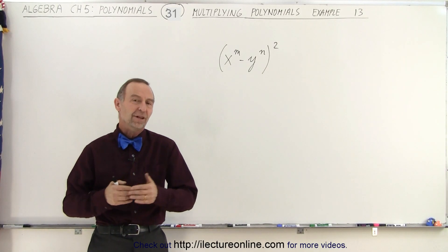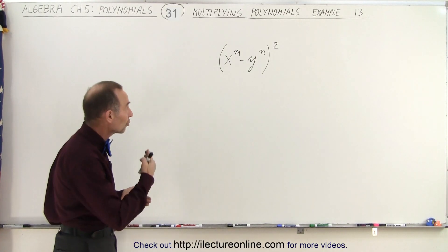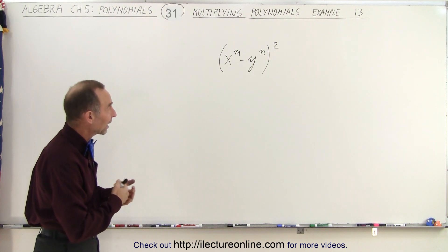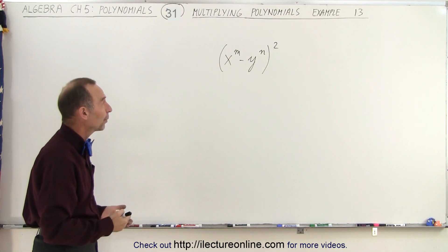Welcome to my lecture online. For the last example in this set, we're going to try this binomial squared: X to the M minus Y to the N quantity squared.